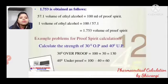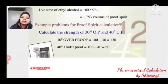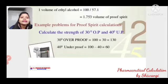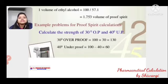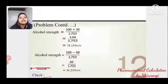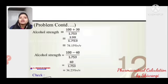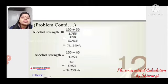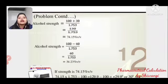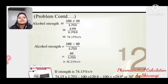Example: Calculate the strength of 30 over proof and 40 under proof. For 30 over proof: 100 + 30 = 130. For 40 under proof: 100 − 40 = 60. For alcohol strength, it is (100 + 30) / 1.753, and for under proof: (100 − 40) / 1.753, which gives 74.15%.